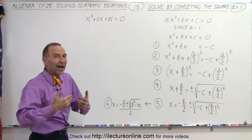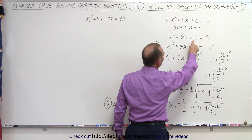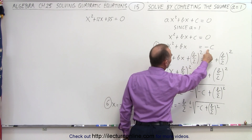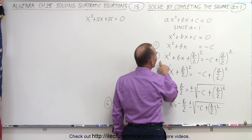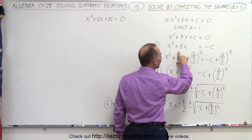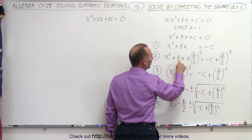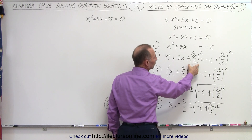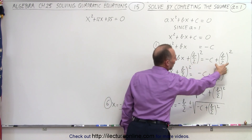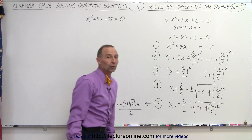There are five steps we go through. The first step is to take the constant term and move it to the right side of the equation. The second step is taking half the numerical coefficient of the middle term, squaring it, and adding it to both sides. So we take b divided by 2, square it, and add it to the left side, and also add b over 2 squared to the right side.